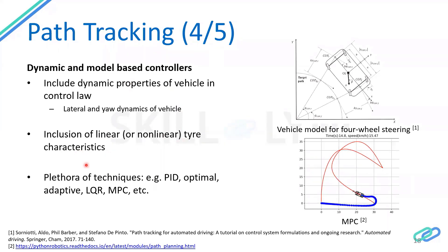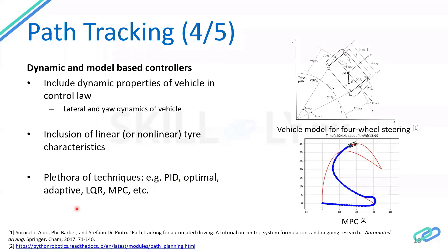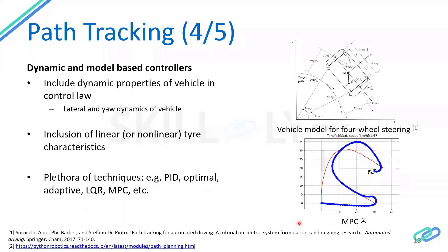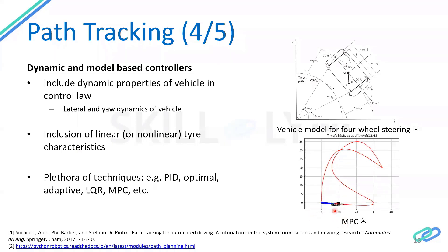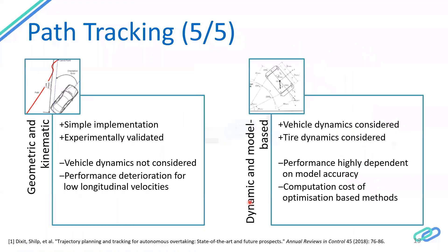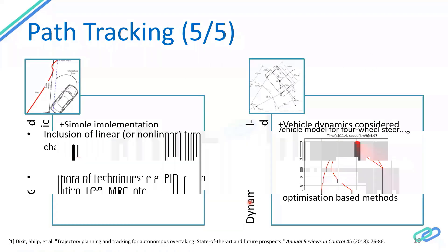Using these model-based or dynamic properties of the vehicle, there are a plethora of techniques available: PID-based controllers, optimal controllers, adaptive controllers, LQR, MPC, etc. As an example, an MPC-based approach for tracking a reference path produces these black crosses — the path right in front of the vehicle that it wants to track — and then it tries to follow the reference.